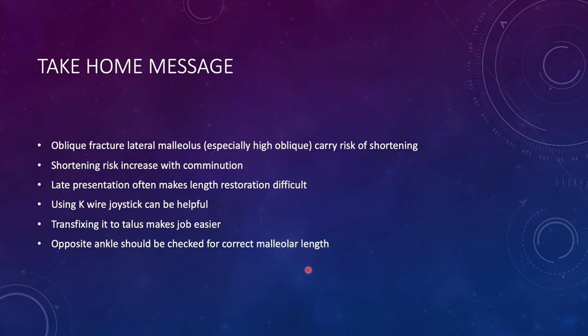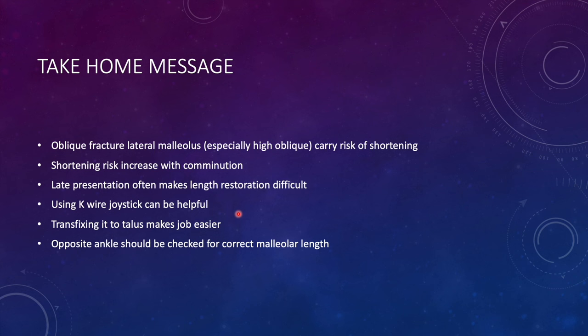Take-home messages: First, a long oblique fracture pattern — especially those exiting at a higher level — is inherently unstable, and caution is needed to avoid shortening. Shortening risk increases with comminution, especially when both proximal and distal comminution are present. Late presentation makes reduction more difficult, requiring distraction of the distal fragment for proper length. A K-wire joystick can be helpful — place it in the distal fragment and transfix it to the talus. Finally, a contralateral ankle radiograph is mandatory when addressing shortening, as it serves as the standard for correct distal fibular length restoration.